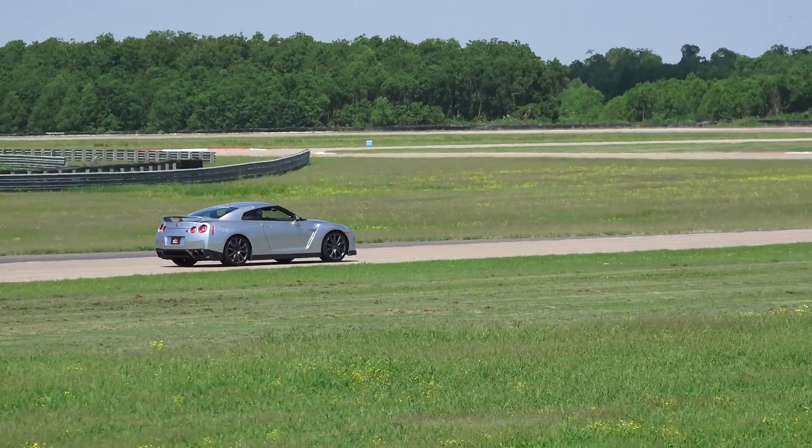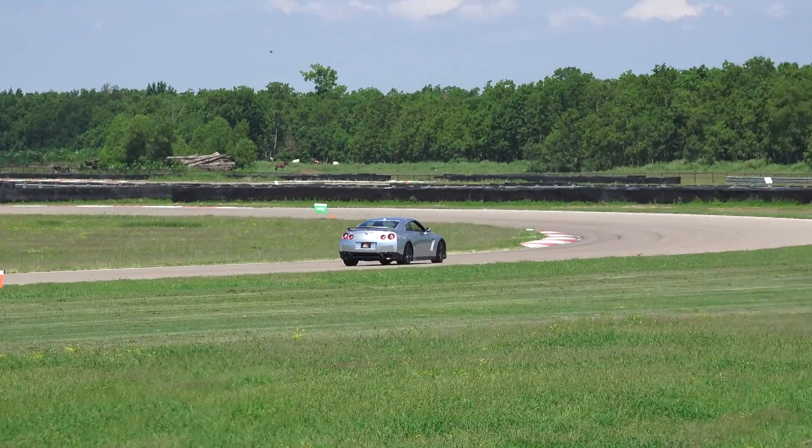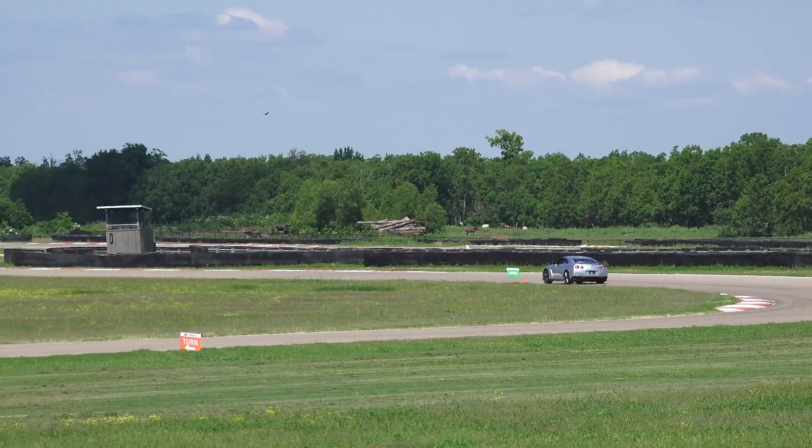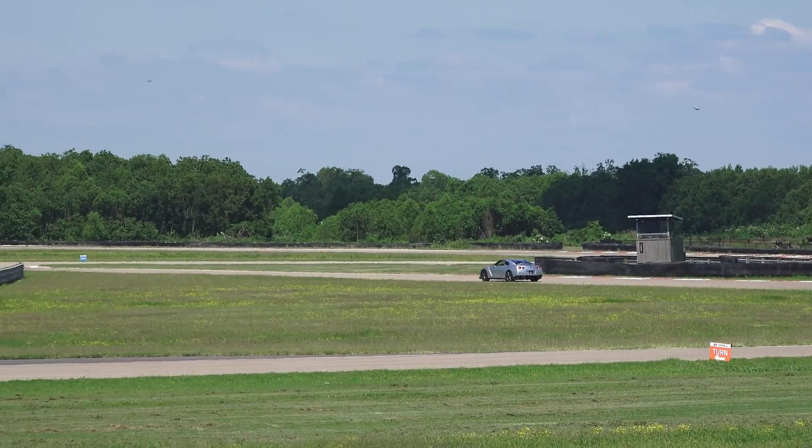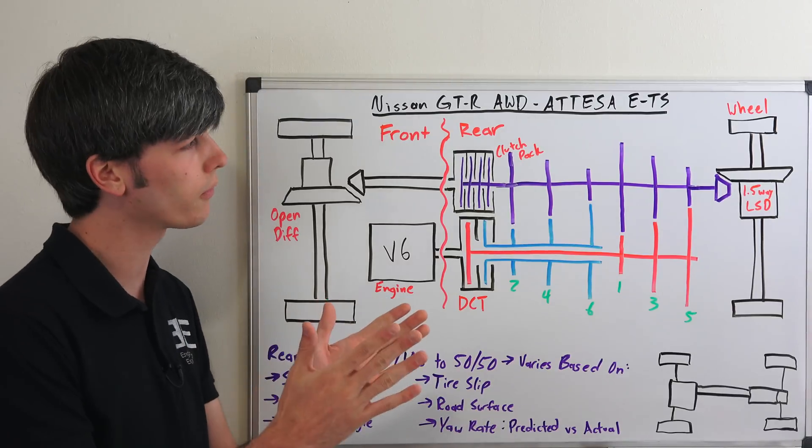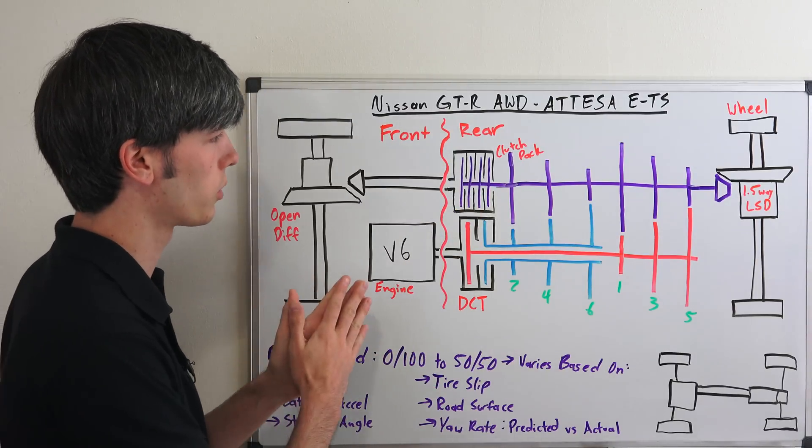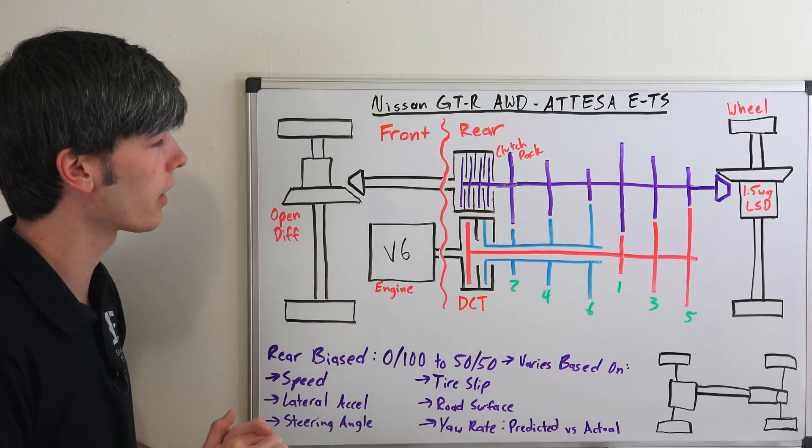And then also it looks at yaw rate. And so here it uses predicted versus actual. So it's going to look at your steering angle, it's going to look at your speed and it's going to say okay, what is our predicted yaw rate and what is our actual yaw rate with the yaw sensor on there? And if those two differ, it will manage this clutch pack in order to manage the torque distribution front to rear. So it is a pretty clever system.